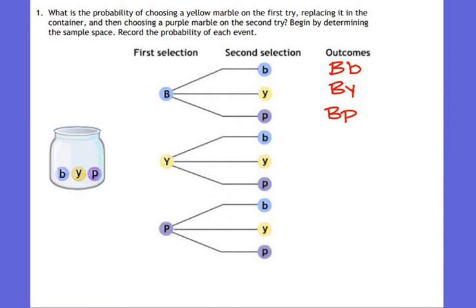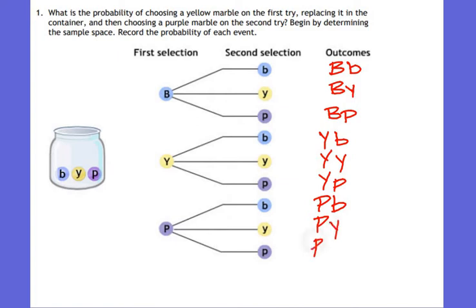If I picked up a yellow first, I could have picked up a blue, a yellow, or a purple on the second try. And I could have picked up a purple first — it could have been purple then blue, purple then yellow, or purple then purple. So that gives me all possible outcomes that could have happened in this marble picking selection.